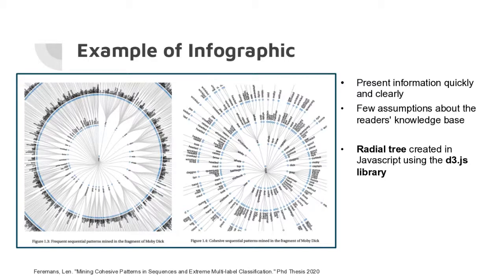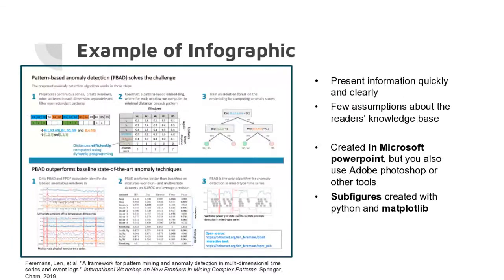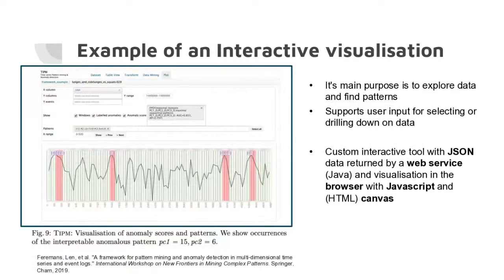This visualization was created using a radial tree, available in the D3.js library — a JavaScript-based library for creating all types of visualizations. Another example of an infographic is a conference poster. Typically you create a presentation and also a poster. This poster was created in PowerPoint; the sub-figures like the line plots on the bottom were created using Python and Matplotlib.